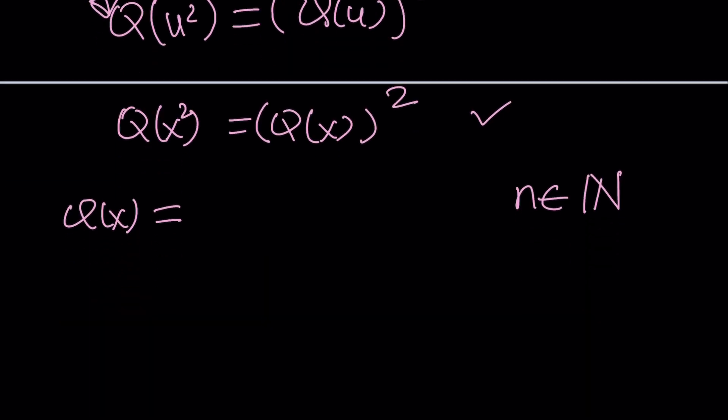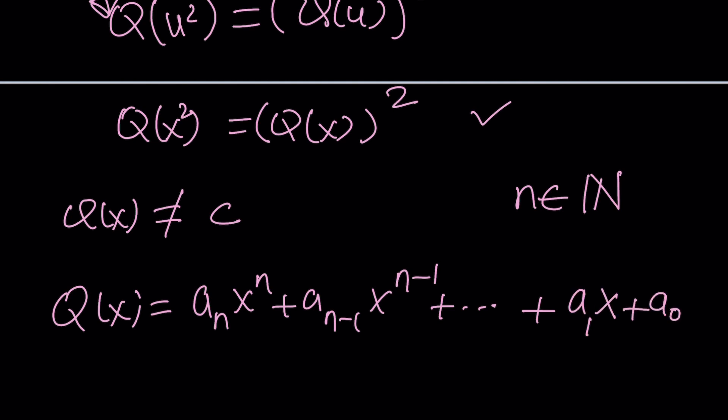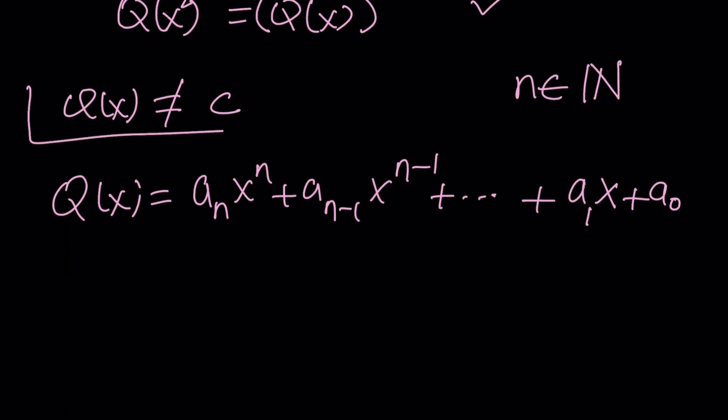But what happens if it's a zero degree polynomial? We'll check that separately because that means Q is a constant. So suppose Q is not constant. What can Q be? Well, Q can be something like a_n x^n plus a_(n-1) x^(n-1), the general form of a polynomial, and it's going to end in a_1 x plus a_0, the constant term. We're assuming that not all of these coefficients are zero because we don't want it to be a constant. We'll look at that separately.